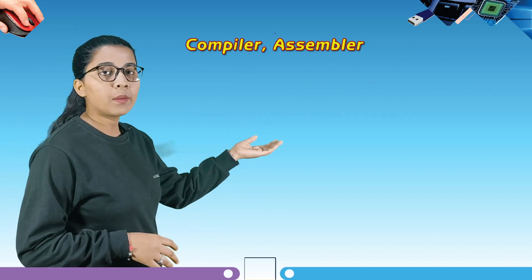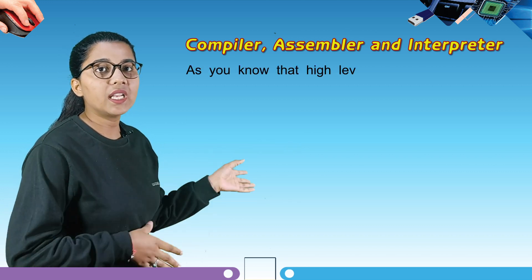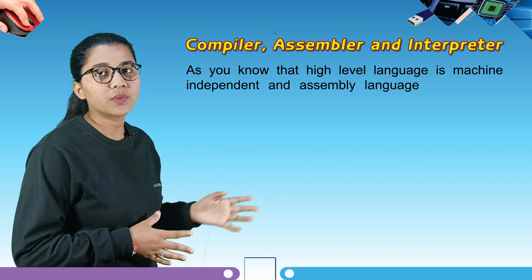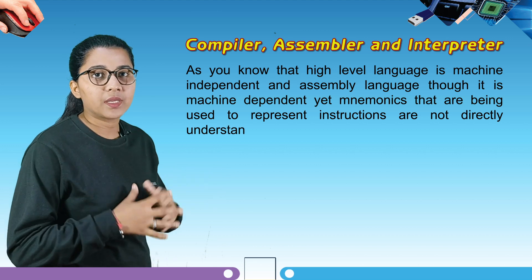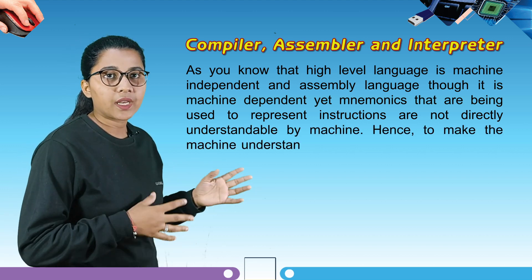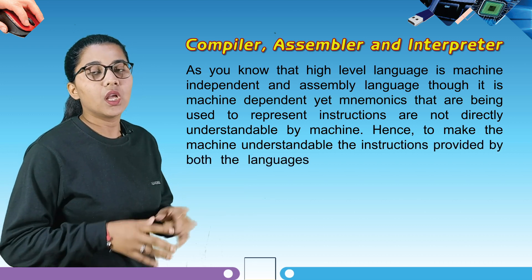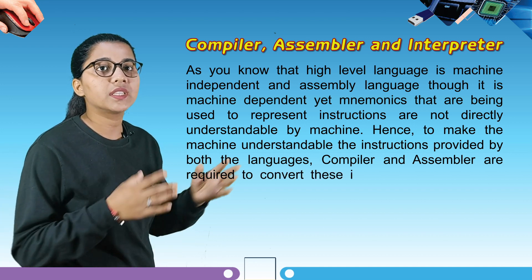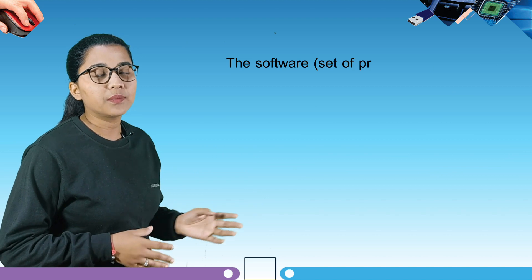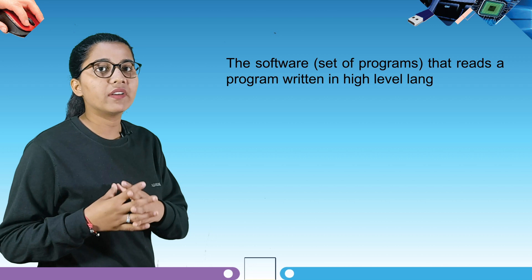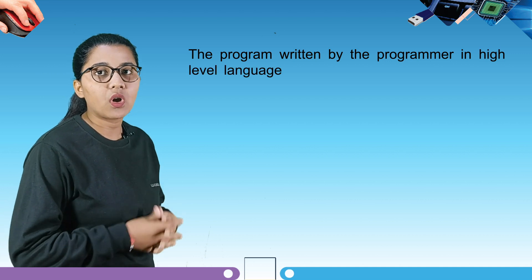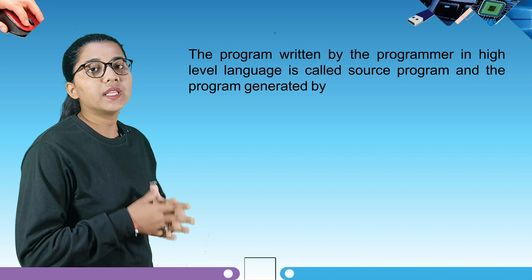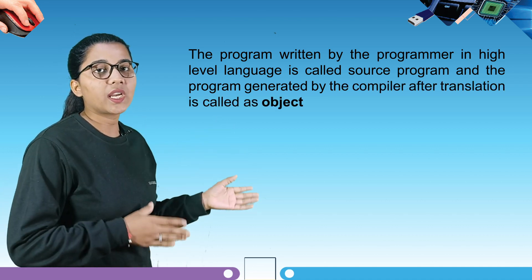Our next topic is Compiler, Assembler and Interpreter. High level language is machine independent, and assembly language mnemonics are not directly understandable by the machine. To make instructions understandable to the machine, a compiler or assembler is required to convert these instructions into machine language. The software that reads a program written in high level language and translates it into an equivalent machine language program is called a compiler. The program written by the programmer in high level language is called the source program, and the program generated by the compiler after translation is called the object program.